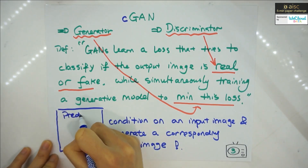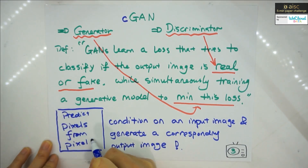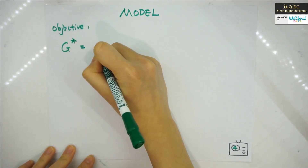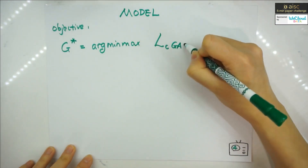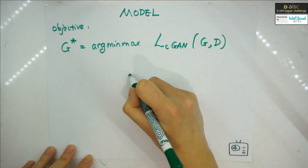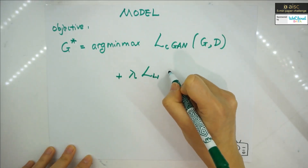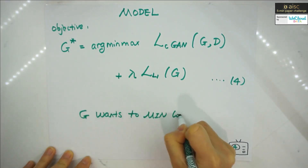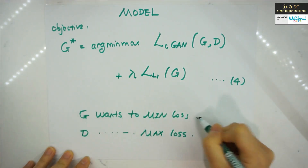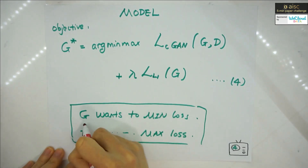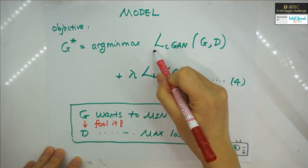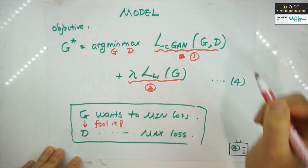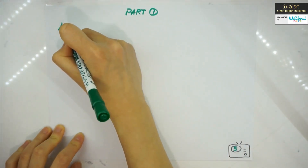In terms of the model, here is the objective function. The generator G* is trying to do minimax optimization with two parts of the loss function. G wants to minimize loss while the discriminator wants to maximize — as always — and G is trying to fool the discriminator.